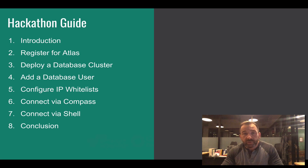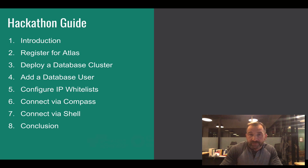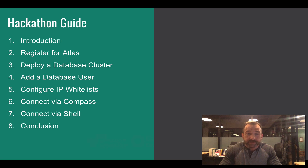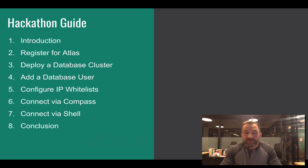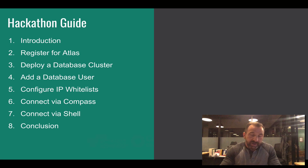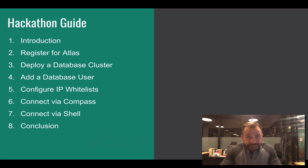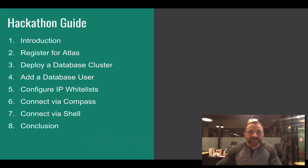In this hackathon guide we'll cover eight basic parts. This is part one, the introduction. From here we'll go into registering for an Atlas account, deploying a database cluster, adding a database user, configuring security parameters like IP whitelists, connecting to the database using Compass, and connecting from the shell. Then we'll wrap things up. Good luck on your hackathon journey — I'll talk to you soon.